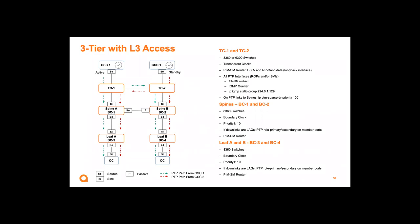In summary, the three deployment models are: two-tier with layer 2 access, two-tier with layer 3 access, and a three-tier model suitable for data center spine-leaf deployments where all layers use IP routing.